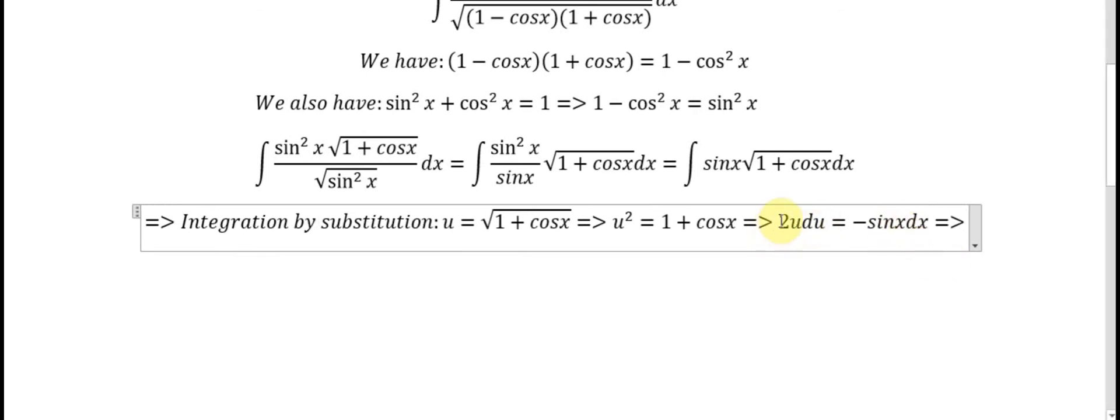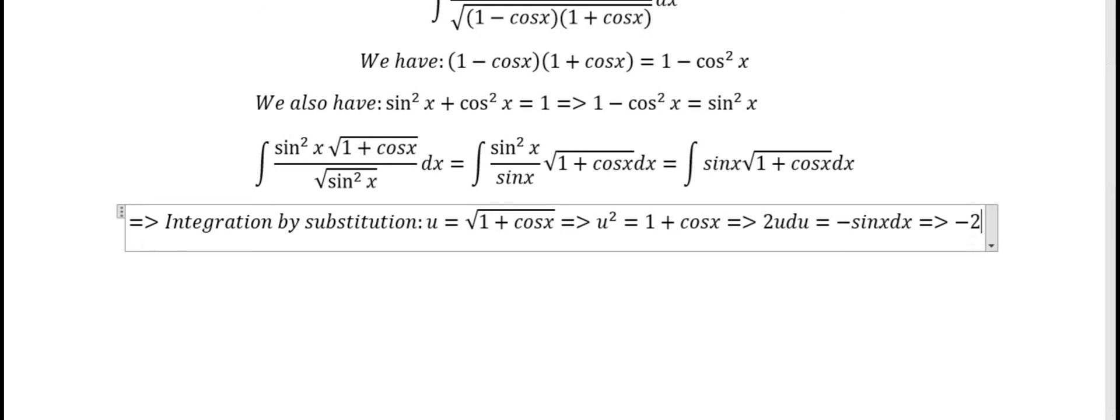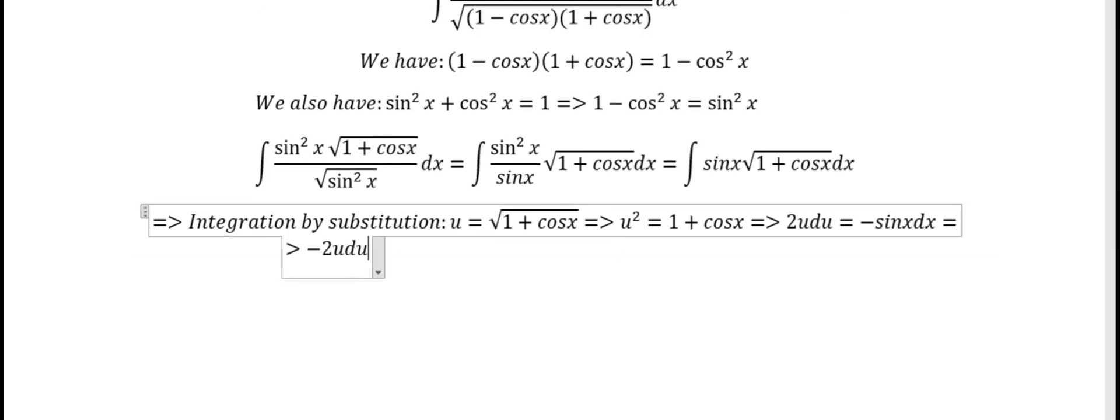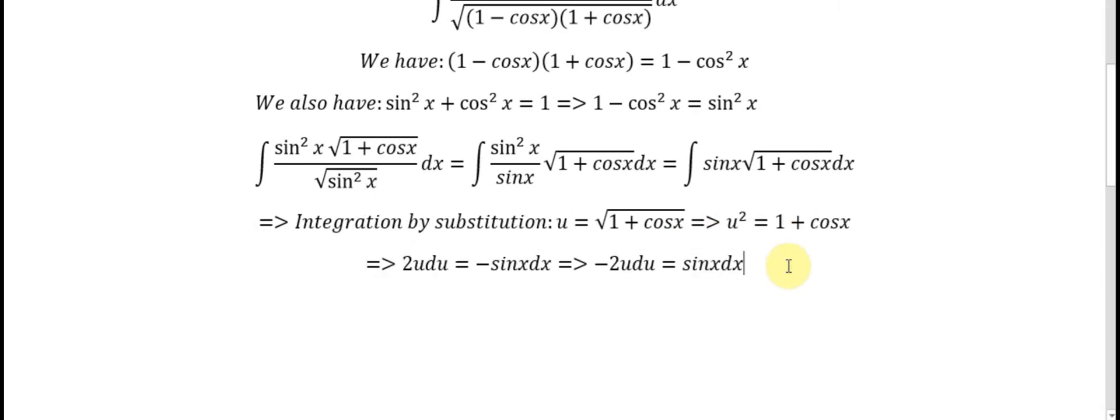We move the minus to the left side, so minus sine s ds equals 2u du. Now we change this integral. The square root of 1 plus cosine s is u, so we have the integral of u times 2u du.